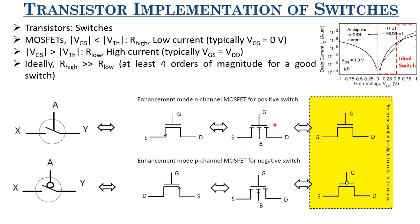For P-MOSFET, the body is N-type, so the diode junction direction is reversed — that is why the arrows are opposite between NMOS and PMOS symbols. This representation with body terminal is more common in analog circuits. For this course, we use a simplified symbol without explicit body connection. Contact sharing is possible only with symmetric structures, so we cannot define whether a terminal is source or drain without knowing the applied voltages.